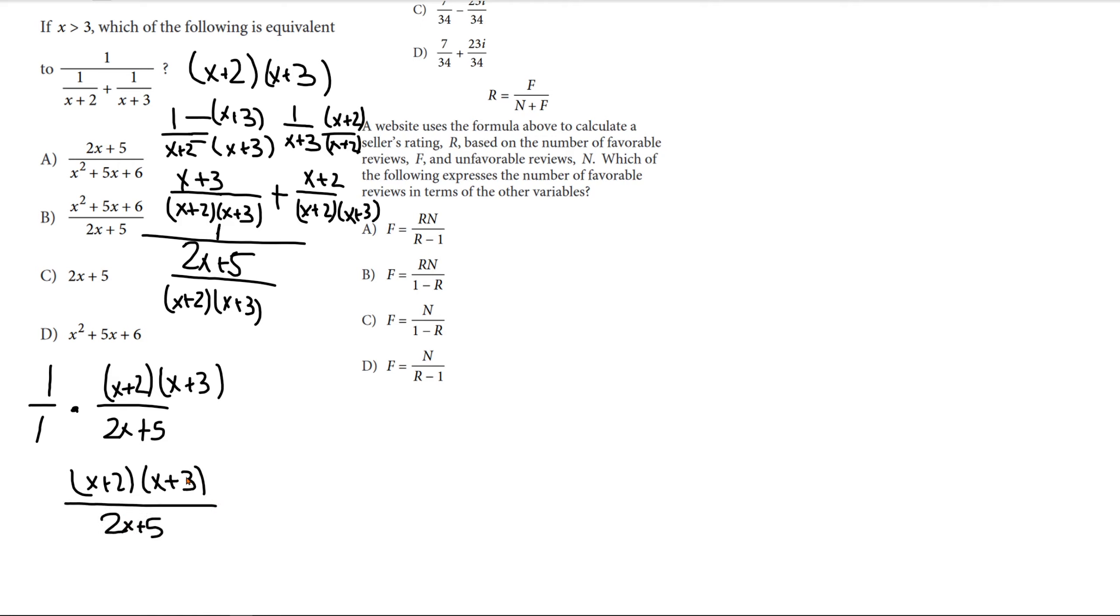And that leaves us with x plus 2 times x plus 3 over 2x plus 5. And now, that's not an answer choice. So what we need to do is expand this. So, through FOIL, what we get is x squared plus 2x plus 3x plus 6 over 2x plus 5. And B is our answer.